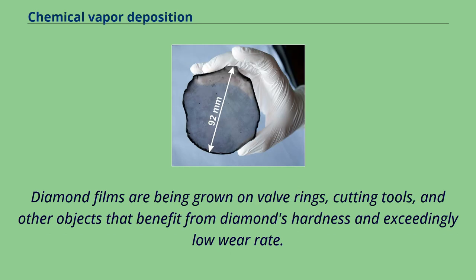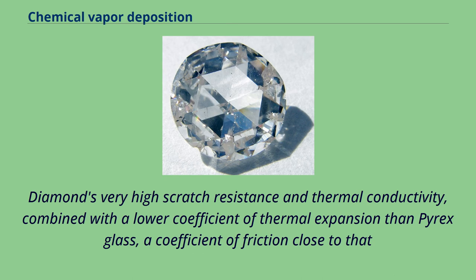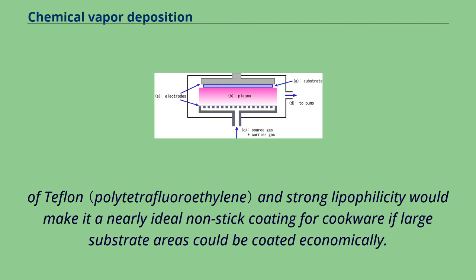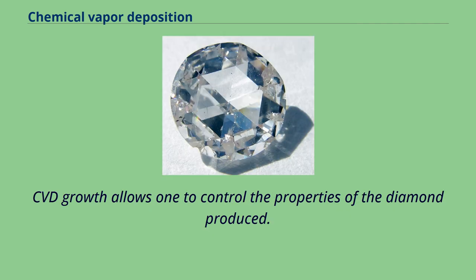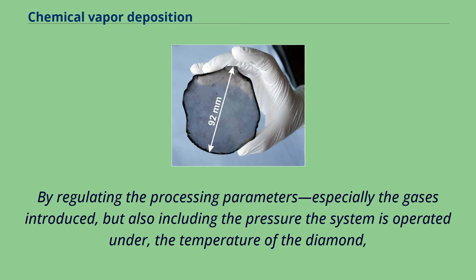In each case, the diamond growth must be carefully done to achieve the necessary adhesion onto the substrate. Diamond's very high scratch resistance and thermal conductivity, combined with a lower coefficient of thermal expansion than Pyrex glass, a coefficient of friction close to that of Teflon, and strong lipophilicity would make it a nearly ideal non-stick coating for cookware if large substrate areas could be coated economically. CVD growth allows one to control the properties of the diamond produced. By regulating the processing parameters — especially the gases introduced, but also including the pressure the system is operated under, the temperature, and the method of generating plasma — many different materials that can be considered diamond can be made.